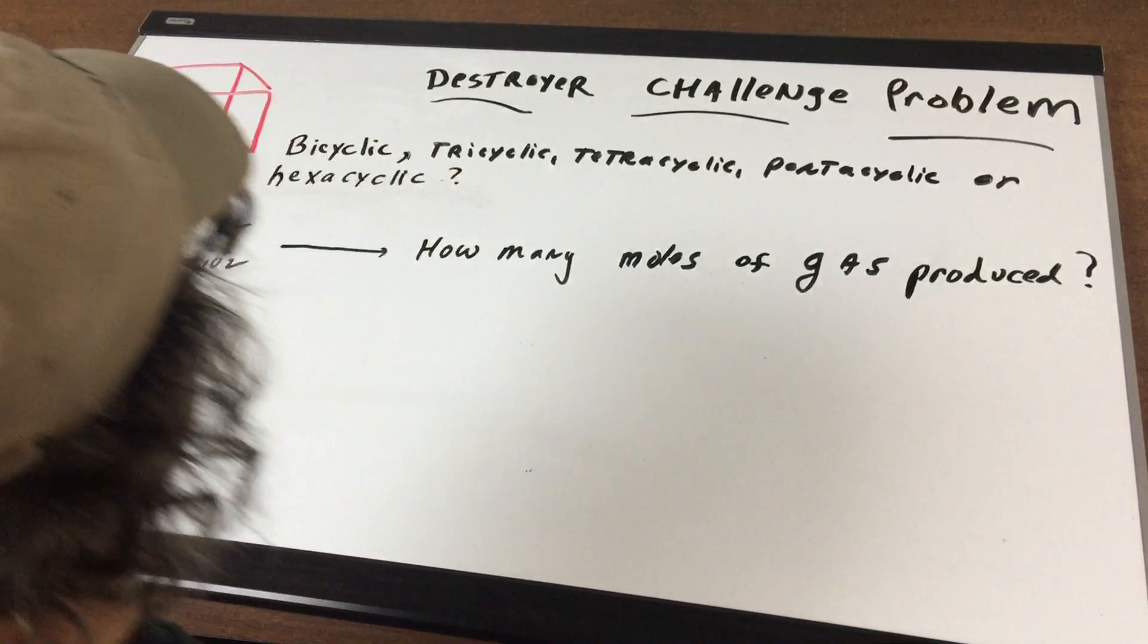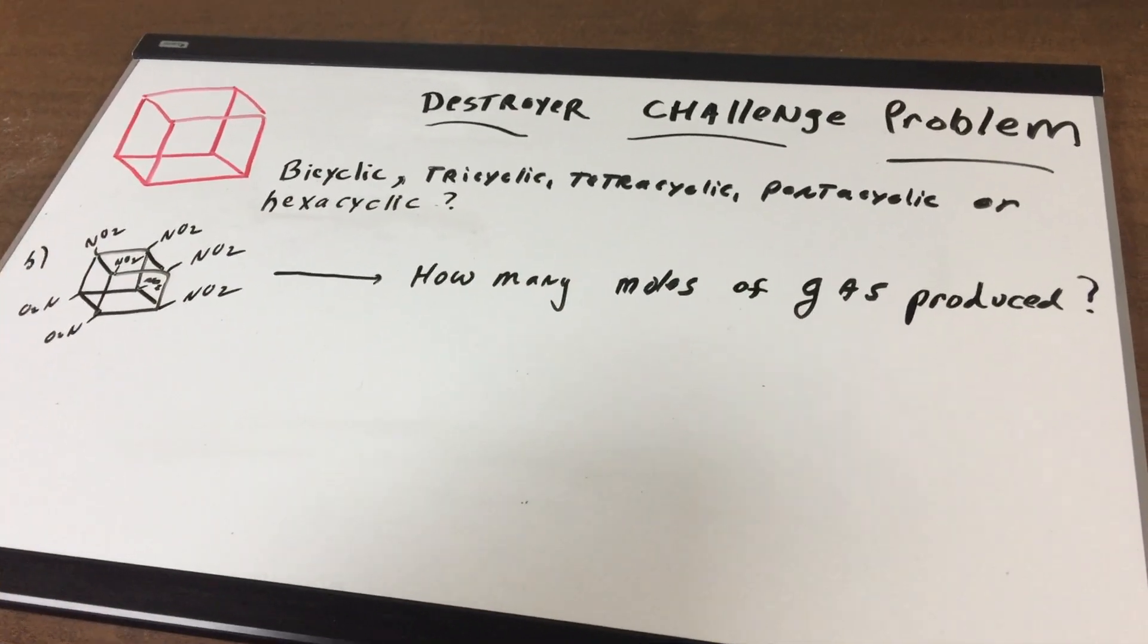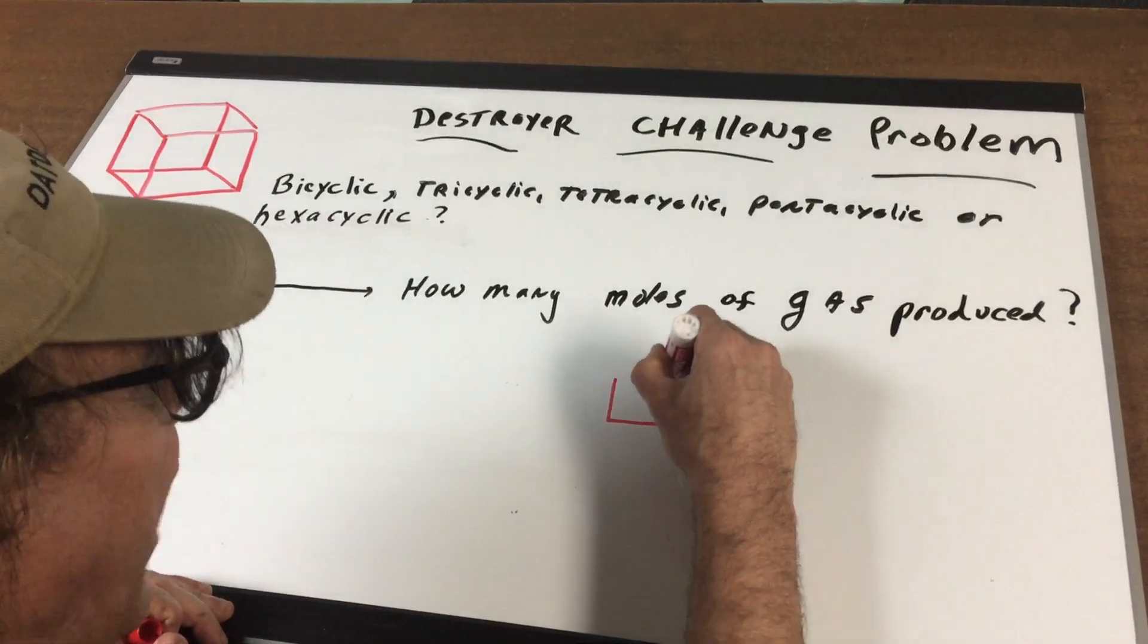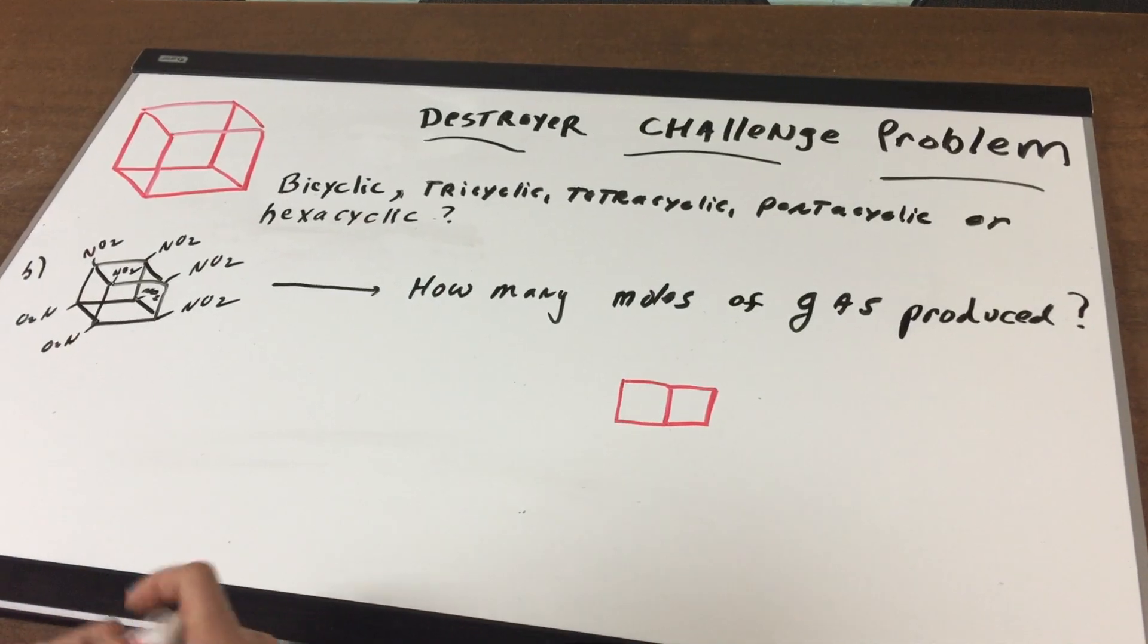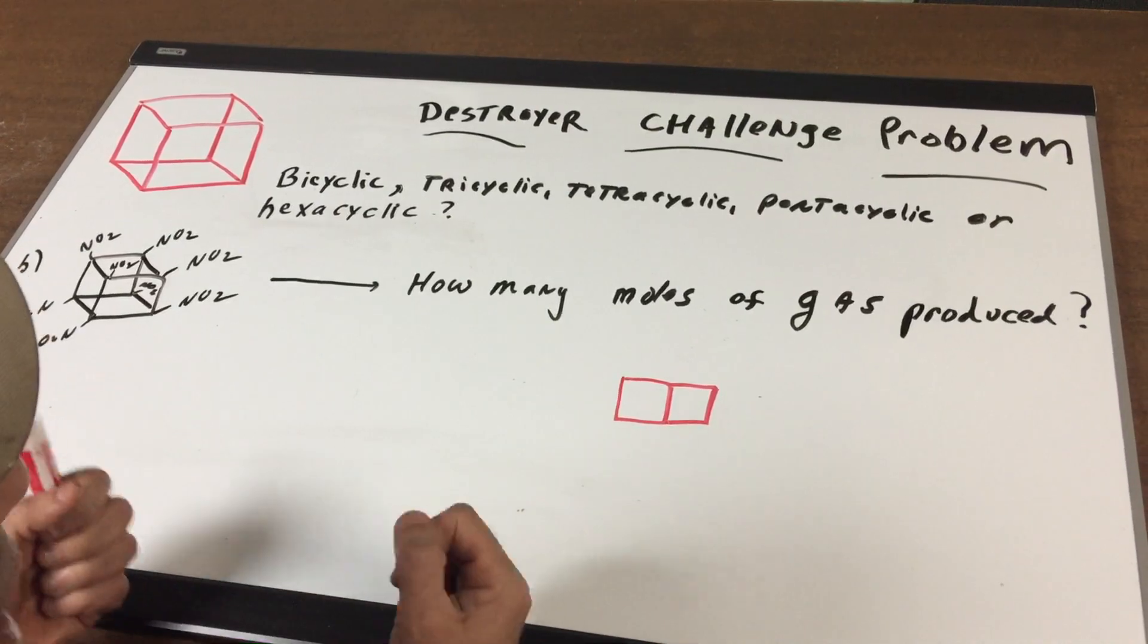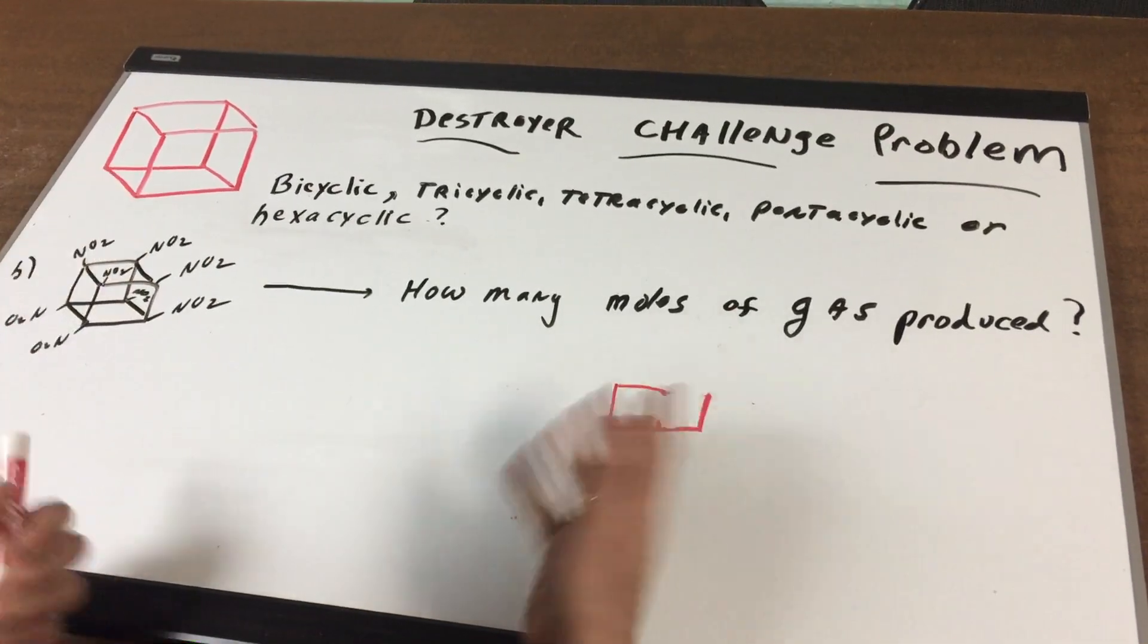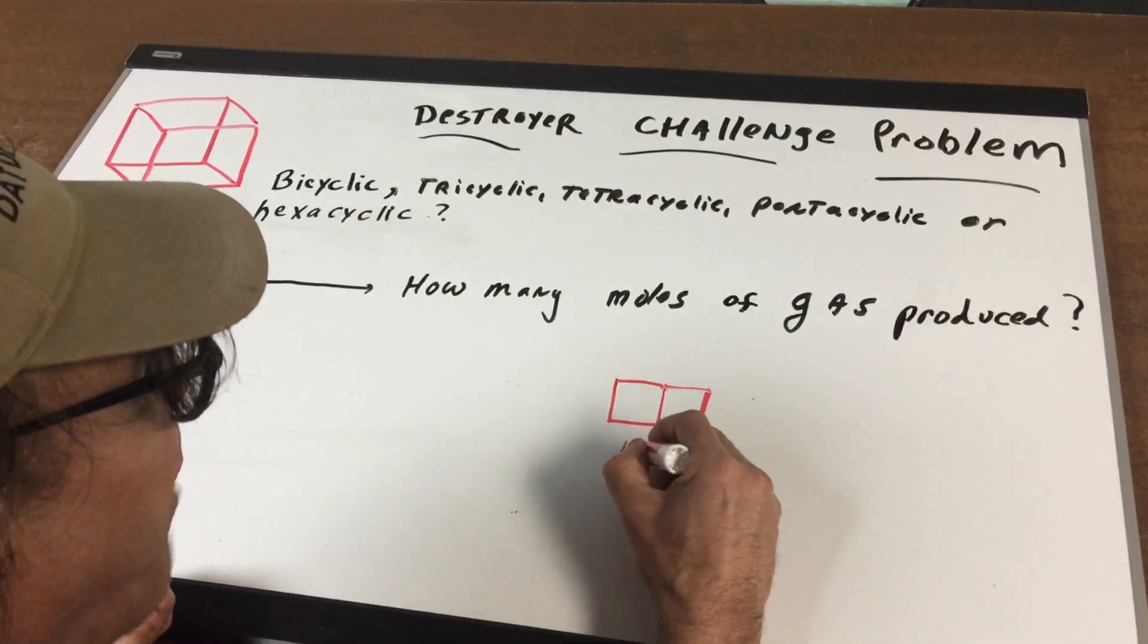All right, so six sides. That sounds like a good answer. Why don't we just do a little test to see if you're right. If I gave you this, you would say bicyclic. And the way you would test for it is you make cuts to open it up to the acyclic form. There's one cut and two cuts and it's now open. So that would be bicyclic.